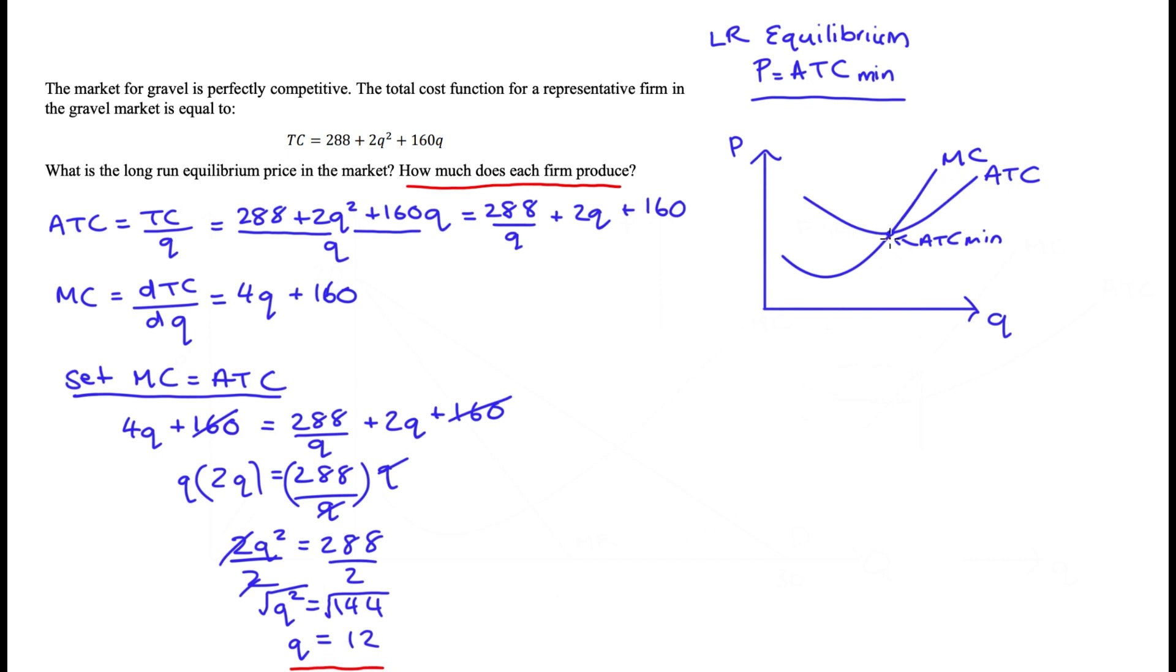cost intersect—that's going to be average total cost minimum—and that point is equal to 12. That's what we found. In order to find the price, that would just be this level here. We can find